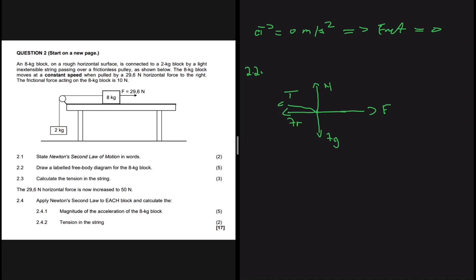The tension and the friction together equal the applied force, and thus the block is moving at constant speed as stated.